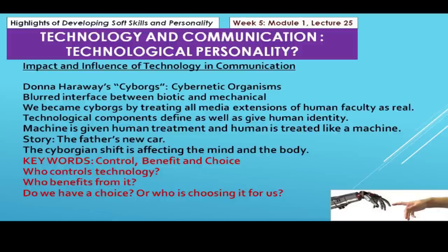The cyborgian shift is affecting the mind and the body. I concluded the lecture with the thought that we need to keep certain keywords in mind: control, benefit, and choice. We need to ask questions like who controls technology, who benefits from it, do we have a choice, or is somebody choosing it for us — and who is giving that person or machine the power to choose?